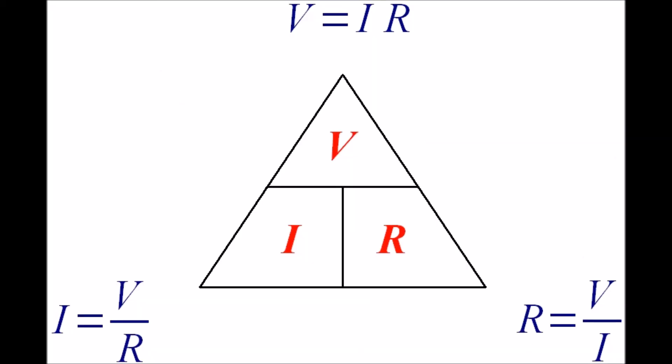Here you see the main components of Ohm's Law. We have V for volts, I for current, and R for resistance. These are the three formulas you can use to calculate between the three. On this pyramid you can cover up the variable that you want to solve for, and the other formula will appear. So if you covered up V, you would take I times R, and that would equal your voltage.